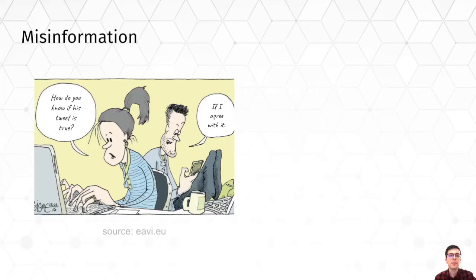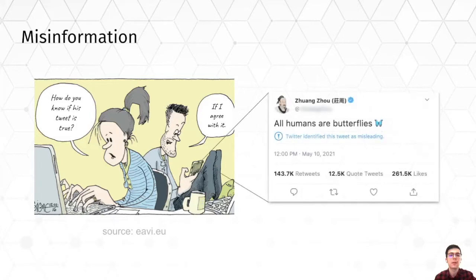With the emergence of social media and many individual news sources online, the spread of misinformation has become a major problem with potentially harmful social consequences. Fake news and rumors can manipulate public opinion, create conflicts, elicit unreasonable fear, suspicion, and confusion.